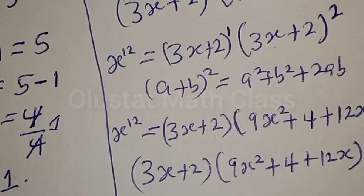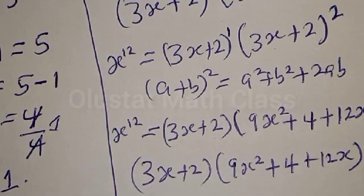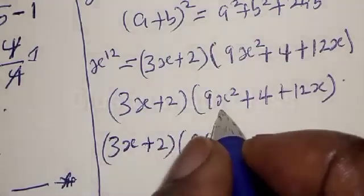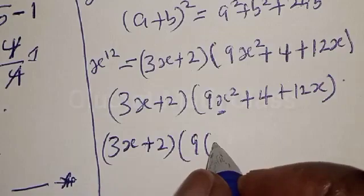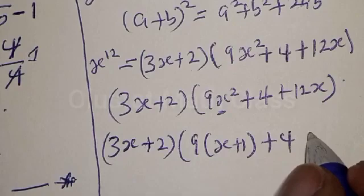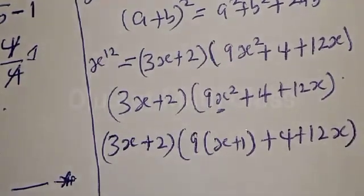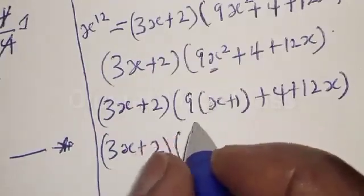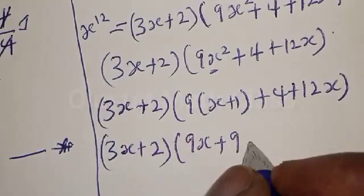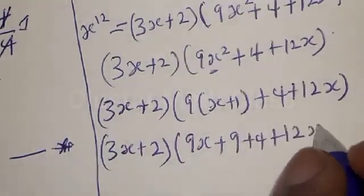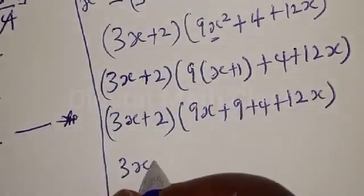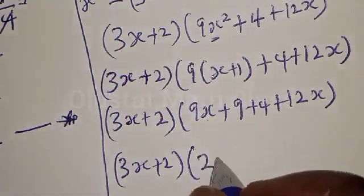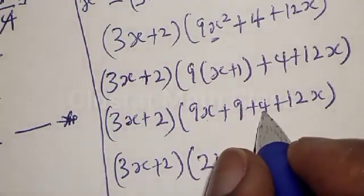We know that s squared equals s plus 1. So we substitute again. We have (3s plus 2) times 9 times (s plus 1) plus 4 plus 12s. Expanding: 9s plus 9 plus 4 plus 12s. Combining like terms: 9s plus 12s is 21s, and 9 plus 4 is 13. So we have (3s plus 2) times (21s plus 13).